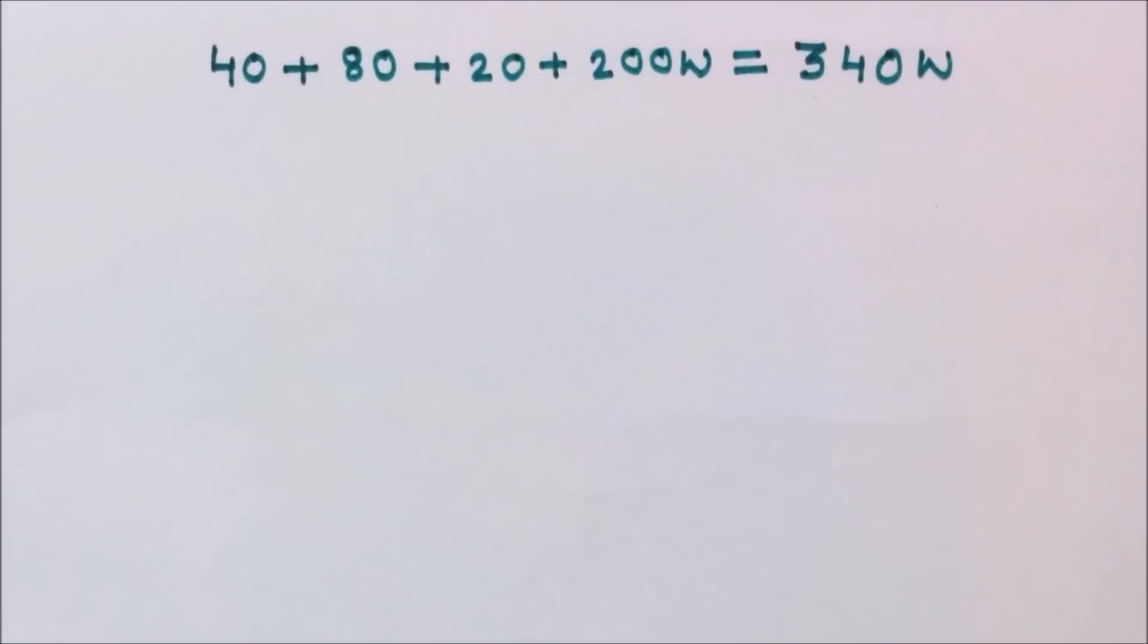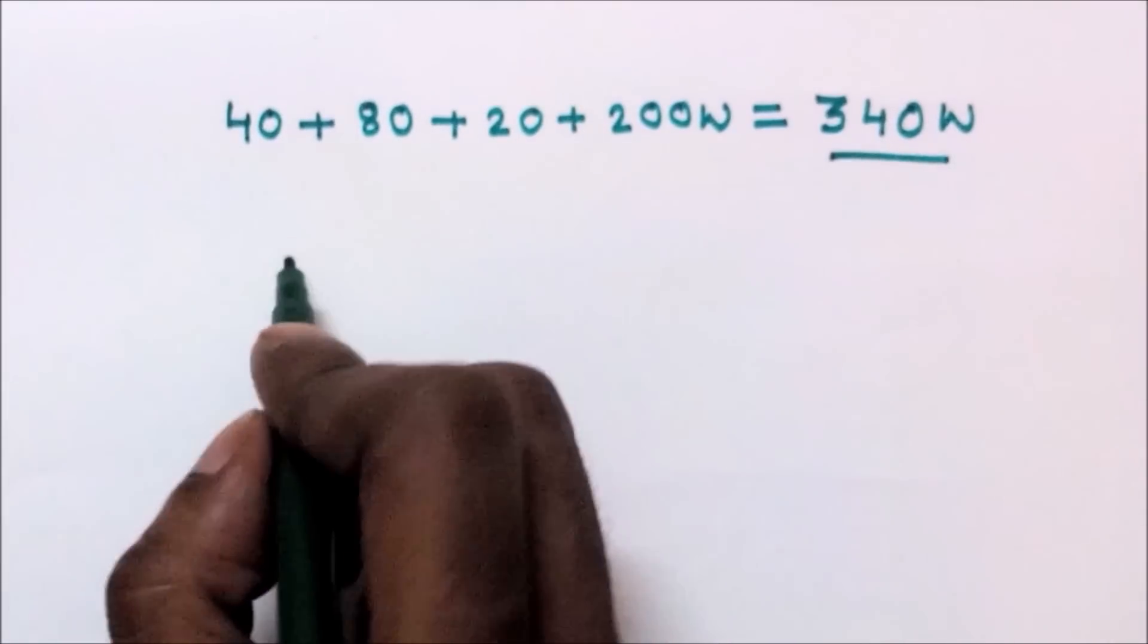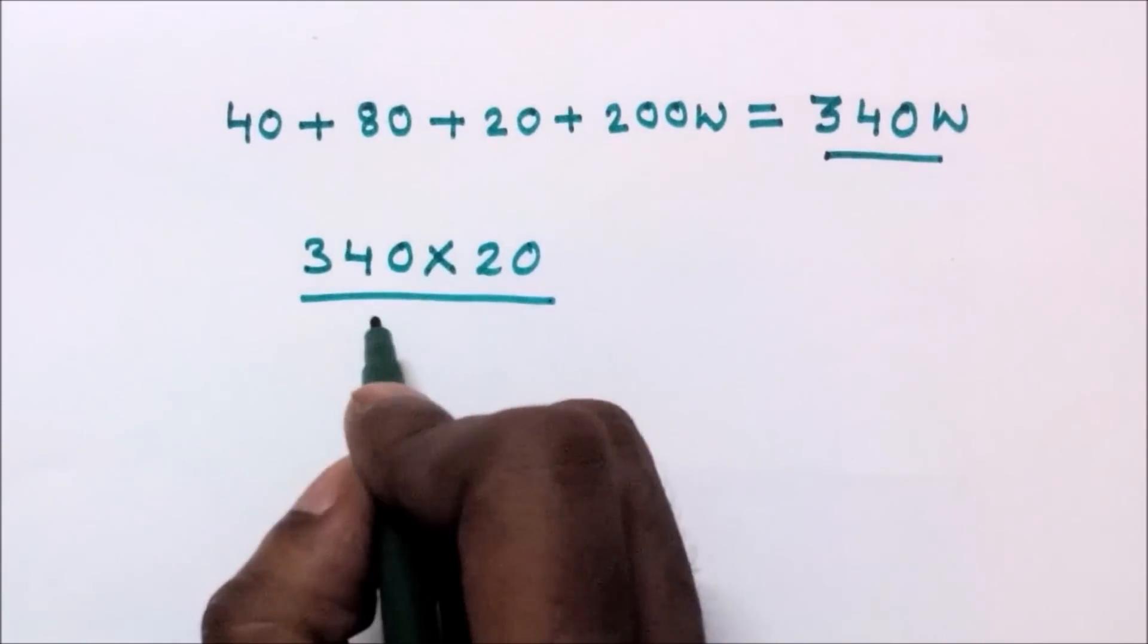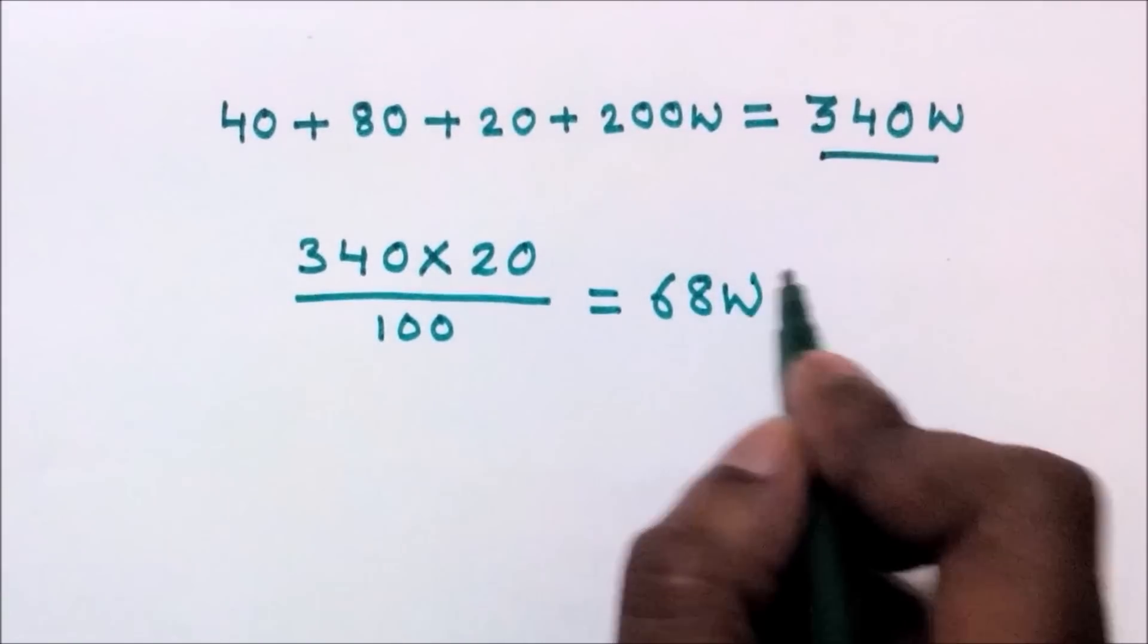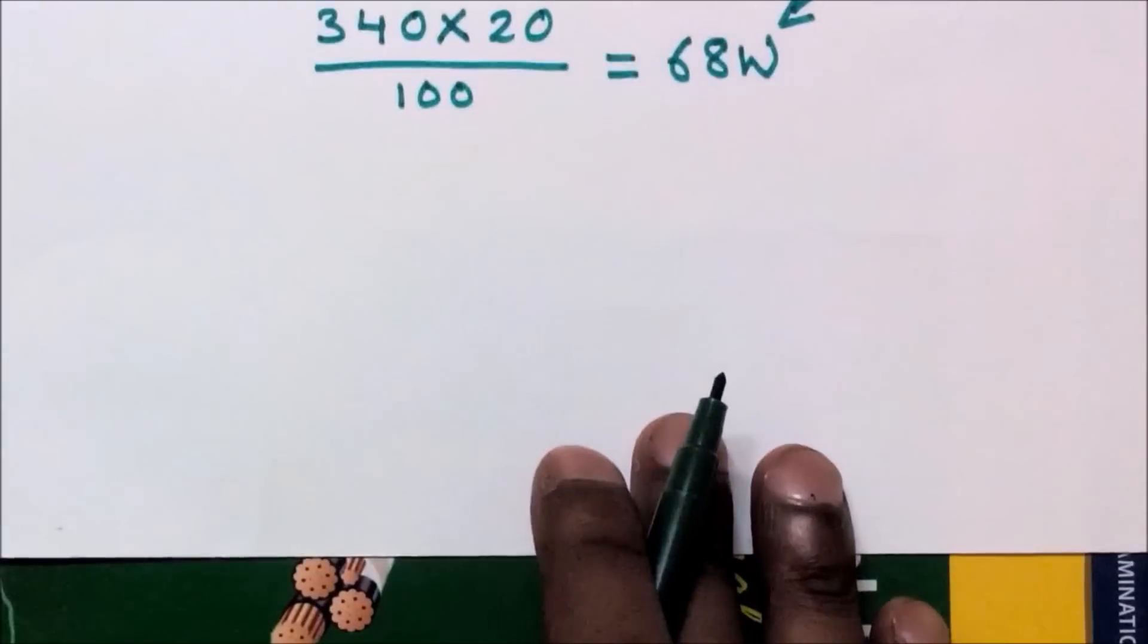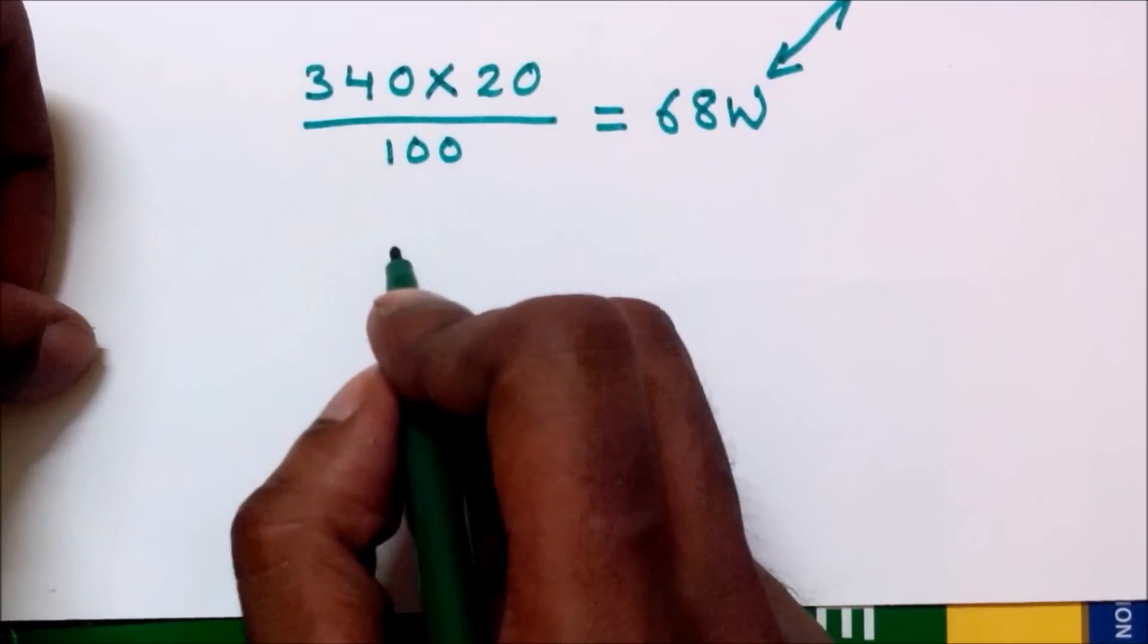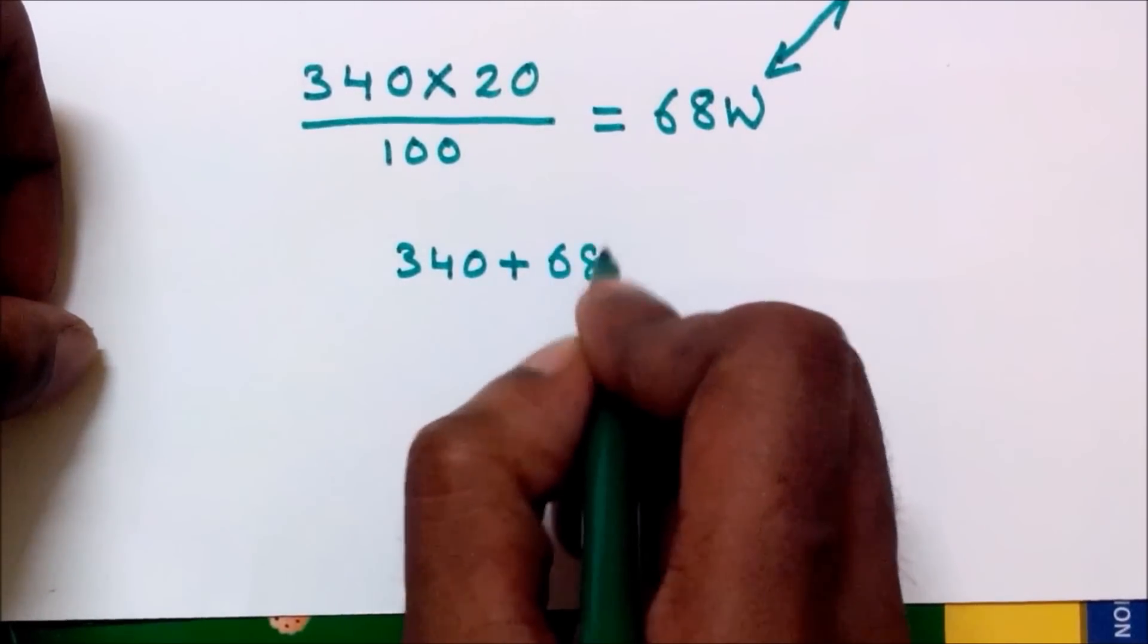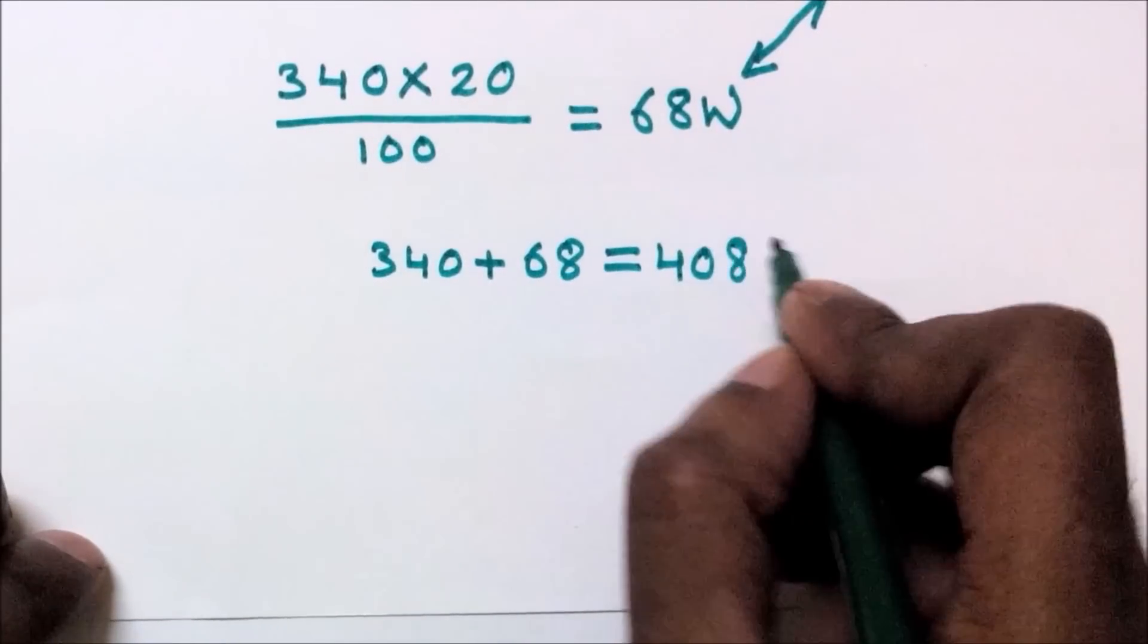Now I am going to add 20% of 340W. So 340 into 20 divided by 100 equals 68W. Now I add this to wattage: 340 plus 68 which gives 408 watt.